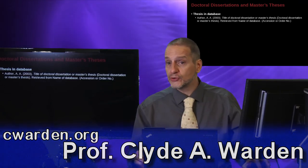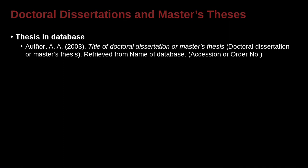What if you want to cite a doctoral dissertation or master's thesis held at a library? This is possible, though your professor probably won't encourage it too much. The format: author last name, first name, middle name, year, title of dissertation, then in parentheses 'Doctoral Dissertation' or 'Master Thesis,' a period, and then the name of the database or library with the access number, since most theses won't have a public URL.